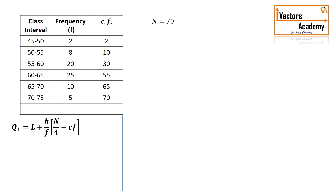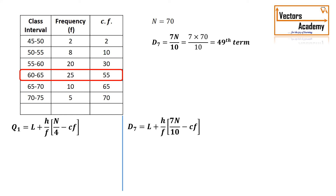Let us use the same example to find the seventh decile, D7. We calculate the factor 7n/10, which comes out to be the 49th term. In the cumulative frequency column, the value 49 crosses in the fourth class. So we select the fourth class. The formula for D7 is: l + (h/f) × (7n/10 − cf), where cf is the cumulative frequency of the previous class.